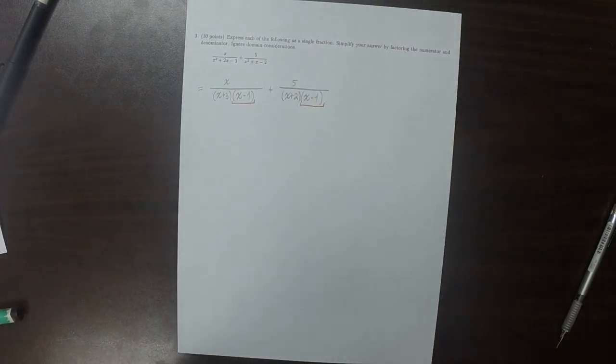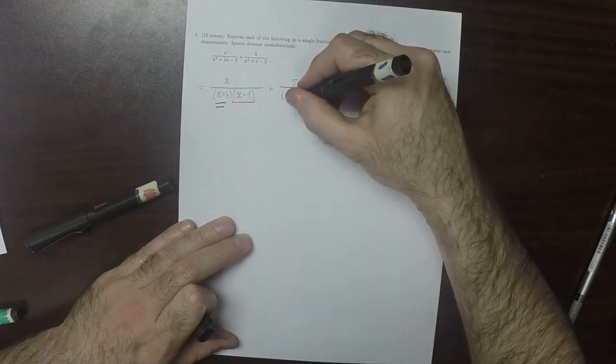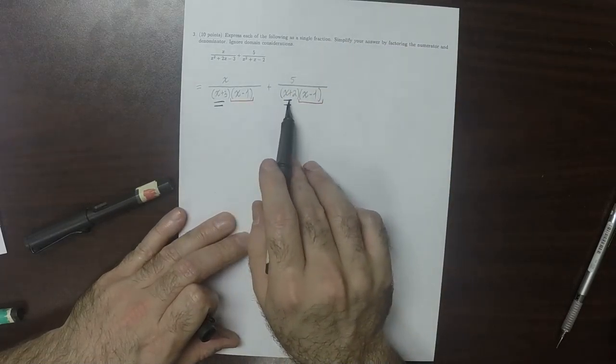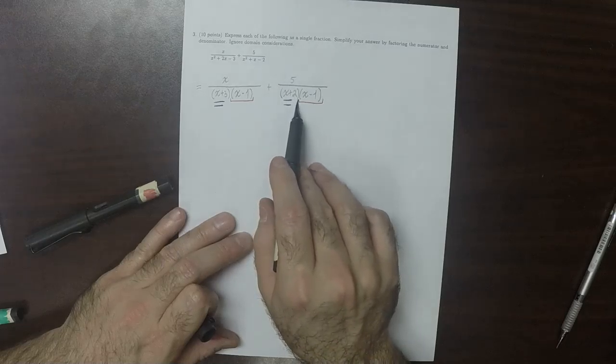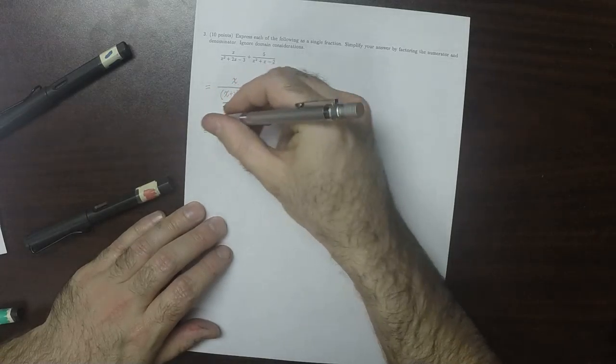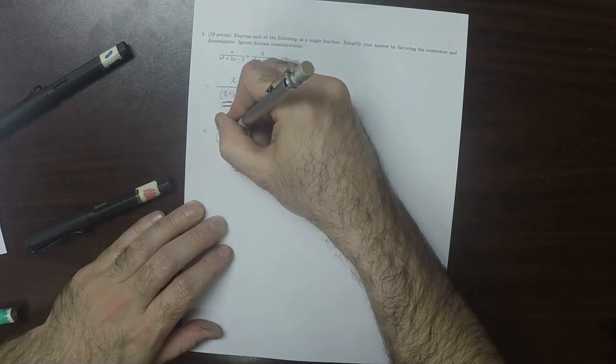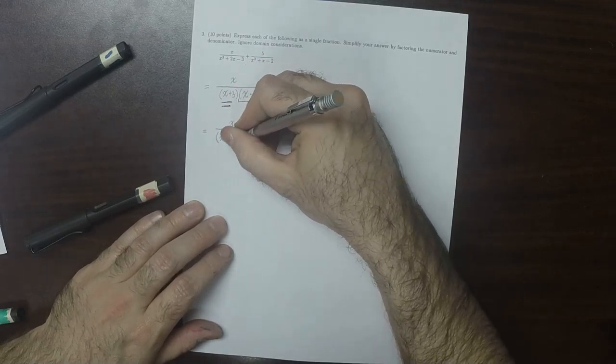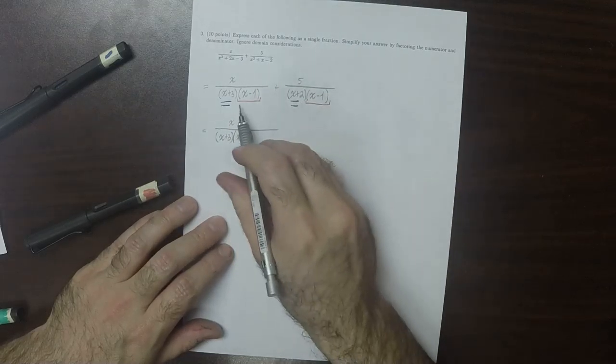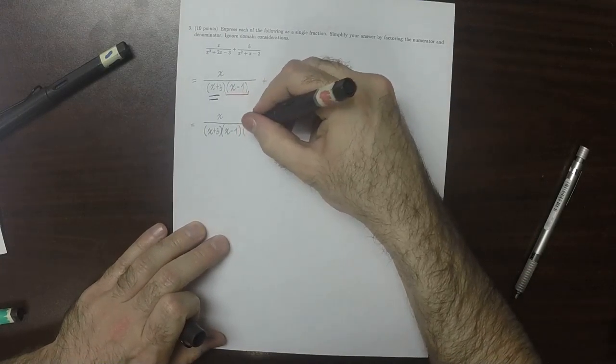So that's good. And then these are different. So this term is missing an x plus 2. And this term is missing an x plus 3. So x plus 3 times x minus 1. And again, this one, this term is missing an x plus 2. So I'll put an x plus 2.